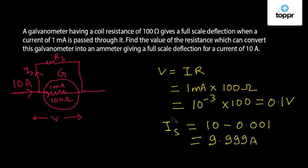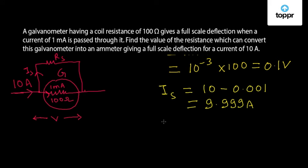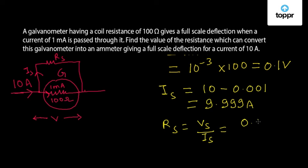To find the shunt resistance, we use the relation Rs equal to Vs divided by Is, where Vs is the voltage drop across the shunt resistance and Is is the current passing through it. Since the shunt is in parallel with the galvanometer, Vs equals the voltage drop across the galvanometer, which is 0.1 volts, and Is is 9.999 ampere. Calculating this gives approximately 0.01 ohm.